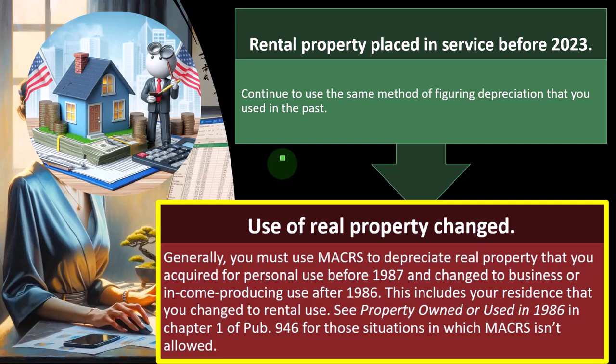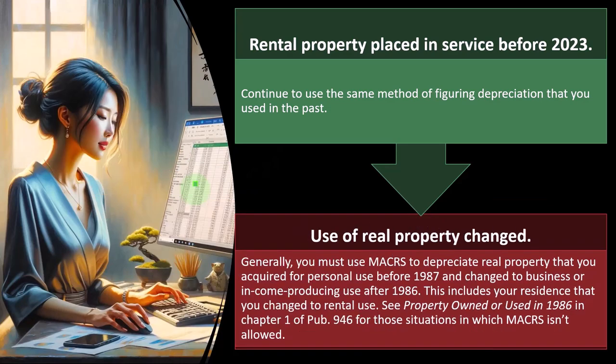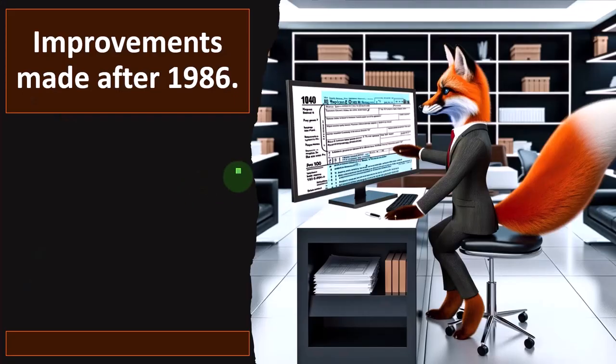Generally, you must use MACRS to depreciate real property acquired for personal use before 1987 and changed to business or income-producing use after 1987 — this includes a residence converted to rental use. If you bought your home before that time as personal property, you don't apply the old methods; you apply MACRS when you convert it to rental property. See Publication 946, Chapter 1, for situations where MACRS isn't allowed.